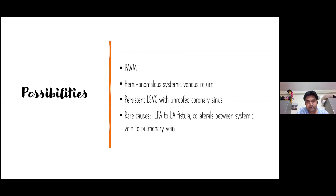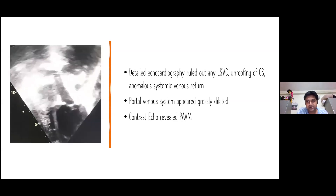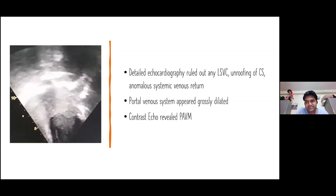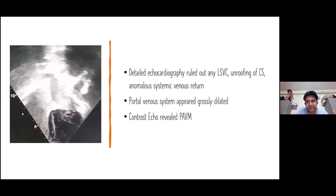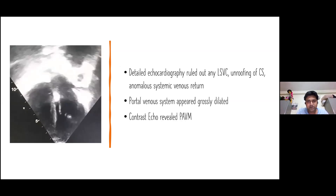So we were confused. The possible causes included PAVM — pulmonary AV malformation — and a few other rare causes like hemi-anomalous systemic venous drainage, persistent LSVC with unroofed coronary sinus, LP to LA fistula, and collateral between systemic vein to pulmonary vein. We did a thorough echocardiography and ruled out any LSVC. The coronary sinus appeared completely roofed, and there was no anomalous systemic venous return.